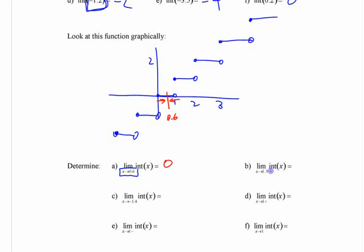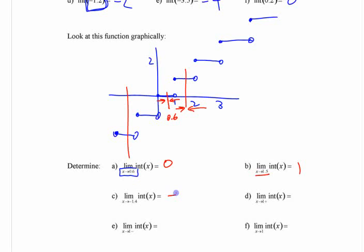The greatest integer as you approach 1.5 — approaching from either side — it's 1. The limit of this function as you approach negative 1.4: here's negative 1.4, and that's negative 2.